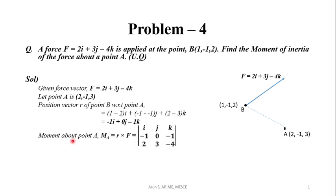The moment about point A is given by R cross F. We can find this using the determinant with i, j, k in the first row, the coefficients of the R vector (-1, 0, -1) in the second row, and the coefficients of the F vector (2, 3, -4) in the third row.